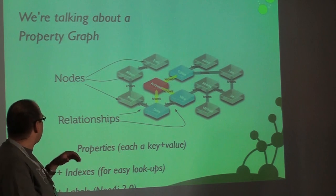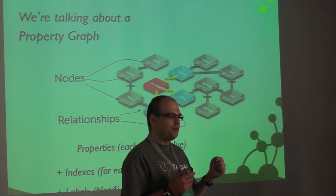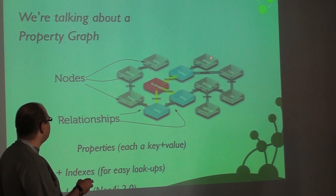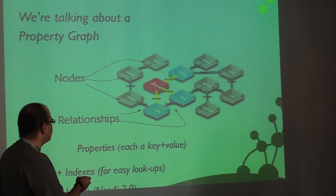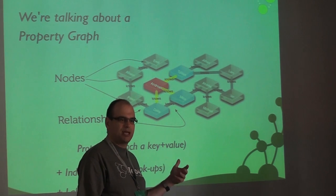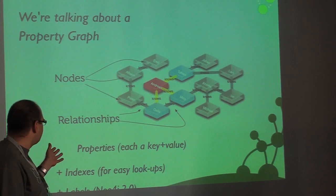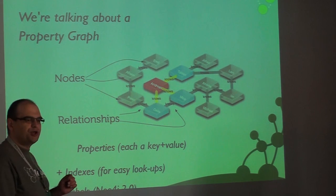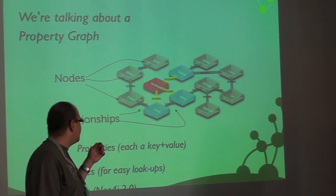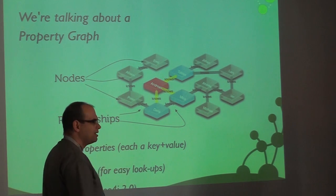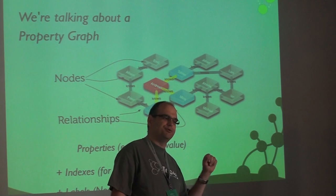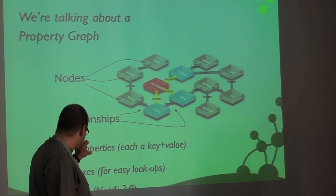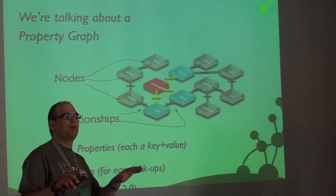Indexes are used to find start points for queries. Without indexes, finding a specific node requires scanning every node in the graph, which doesn't scale. Indexes act as a kind of naming service for the graph. In Neo4j 2.0, for the first time in 10 years, the model changed slightly with the introduction of labels. Nodes may now carry labels — you can think of putting a tag on a node to indicate it's a Person or an Employee. You can put multiple tags on a node. This is new in 2.0.